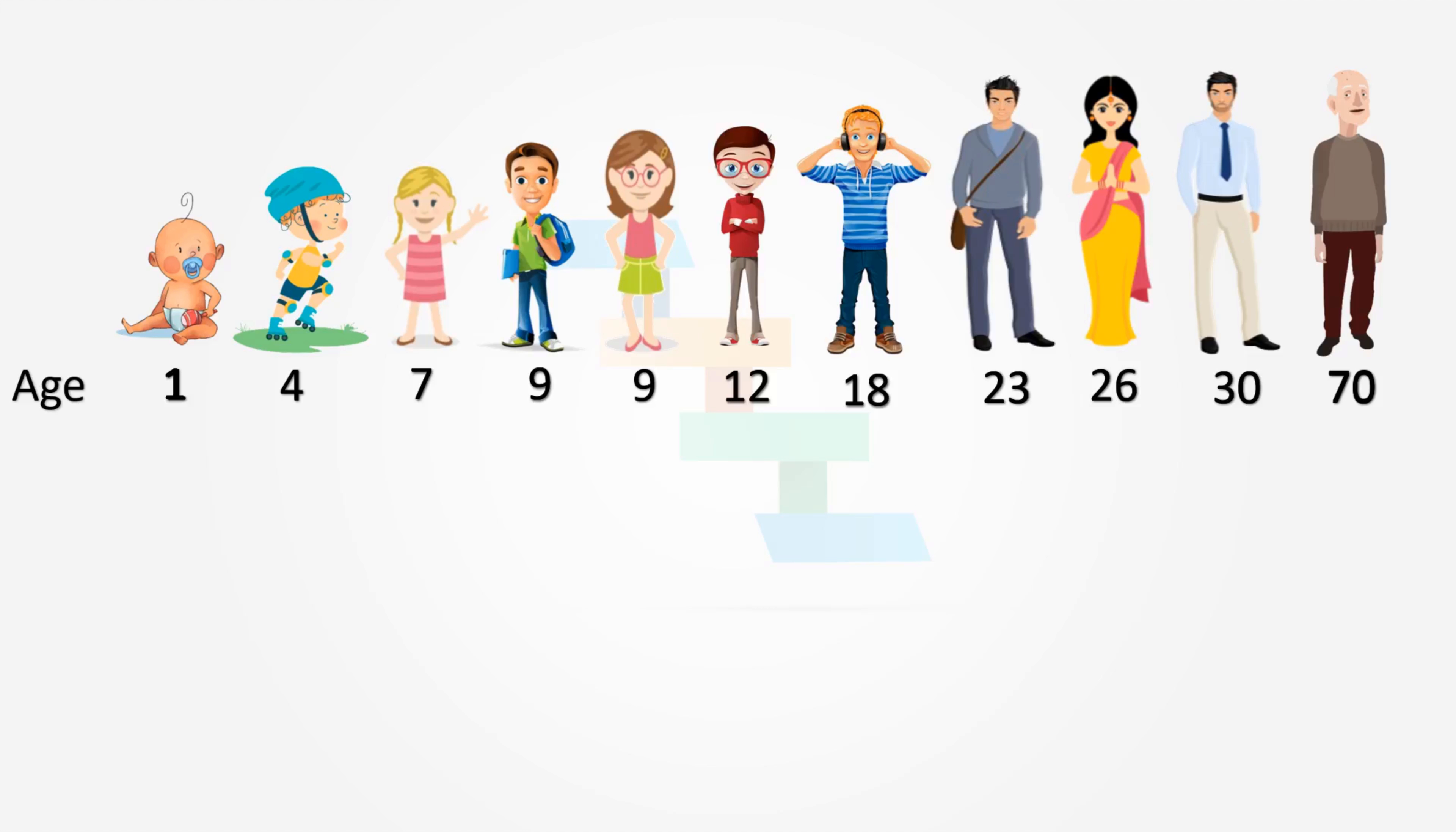The data points, that is the ages, are 1, 4, 7, 9, 9, 12, 18, 23, 26, 30, and 70. Here to find the mean, we need to add all the ages. That is 1 plus 4 plus 7 plus 9 plus 9 plus 12 plus 18 plus 23 plus 26 plus 30 plus 70, which gives us 209 divided by number of people, that is 11, which gives us the result 19. So 19 is the arithmetic mean of this data set.